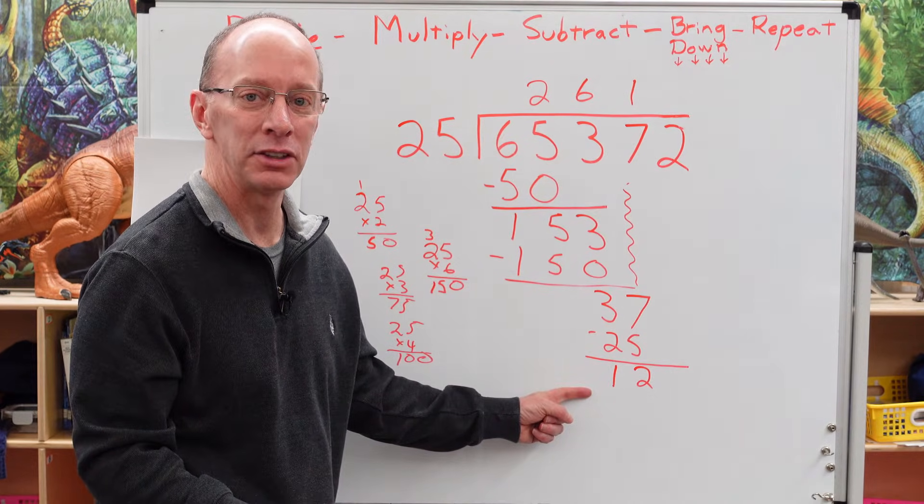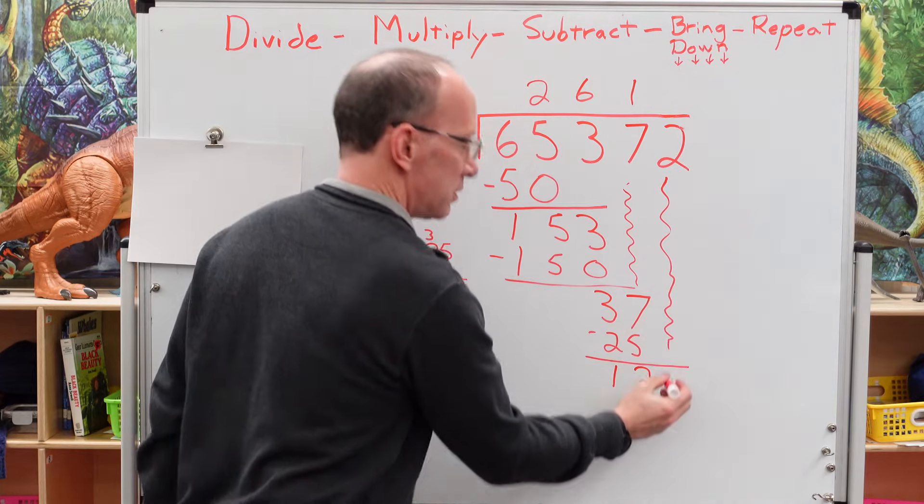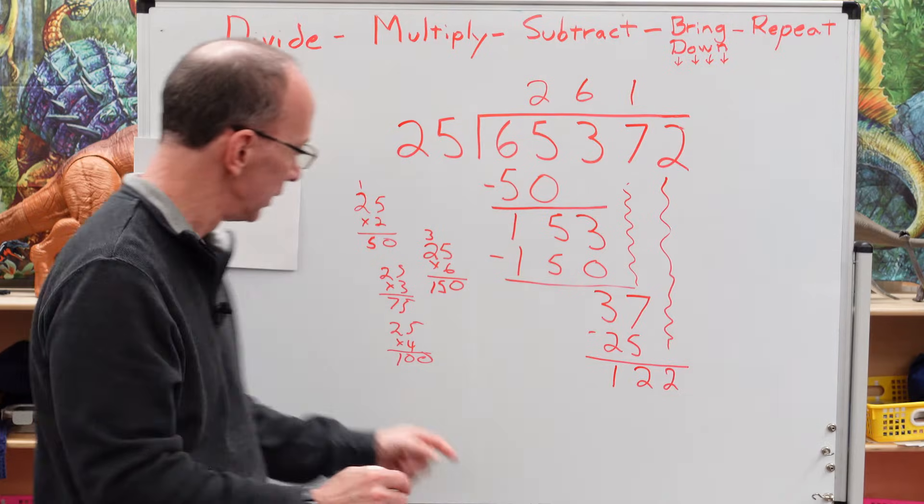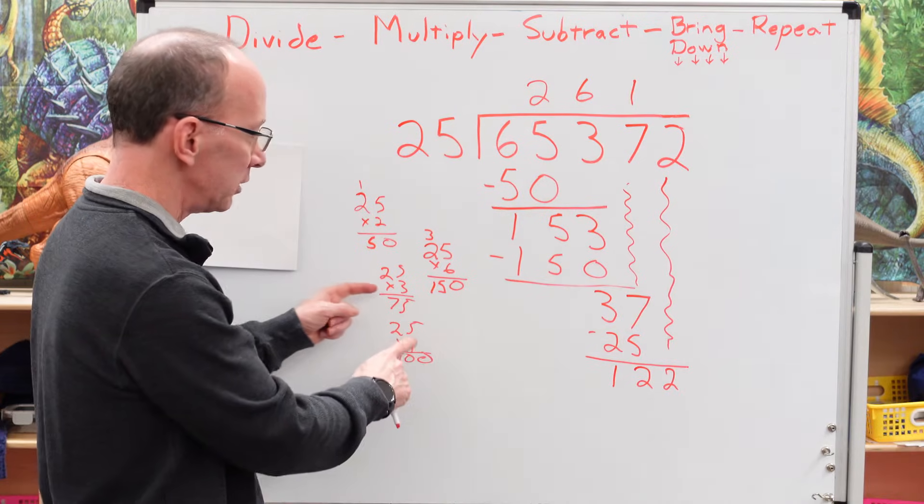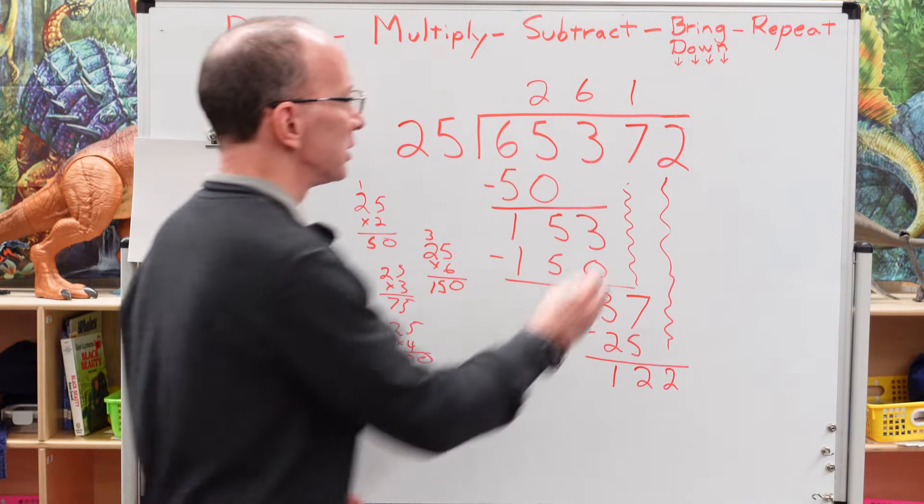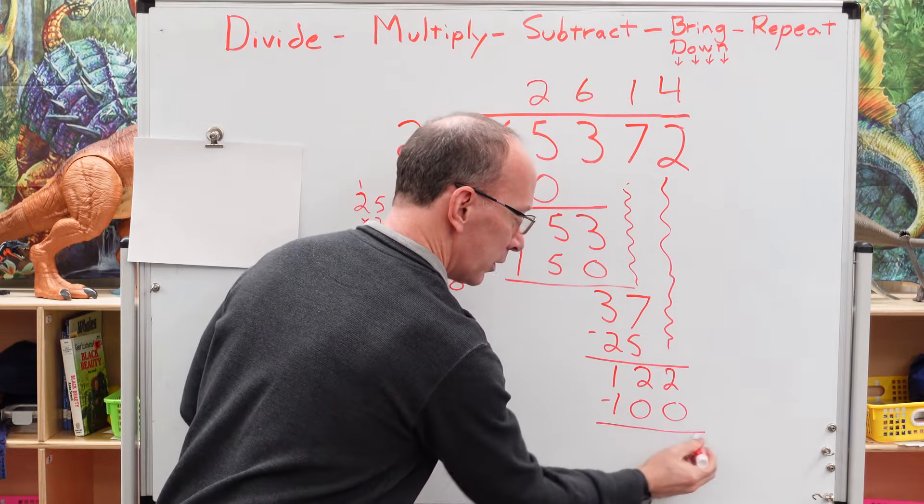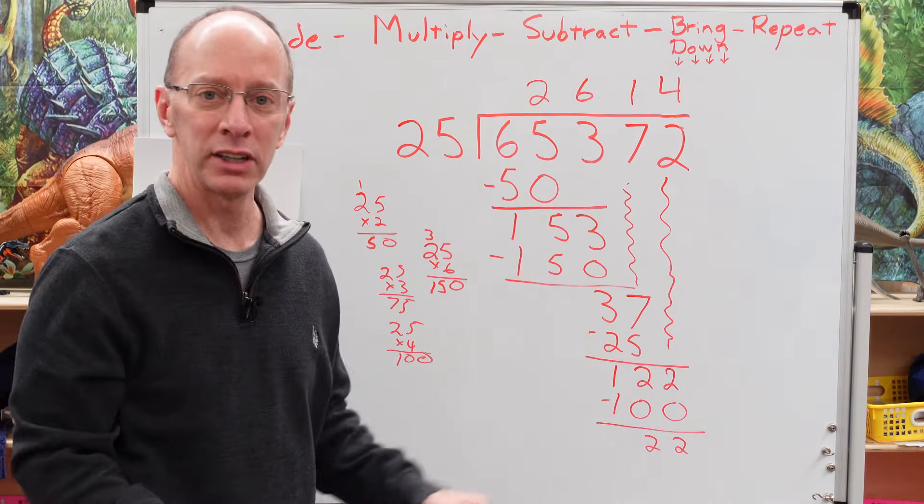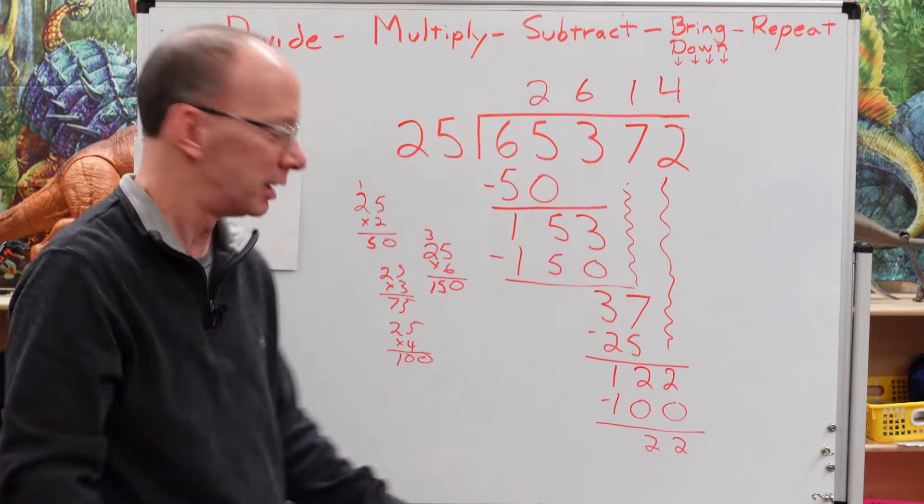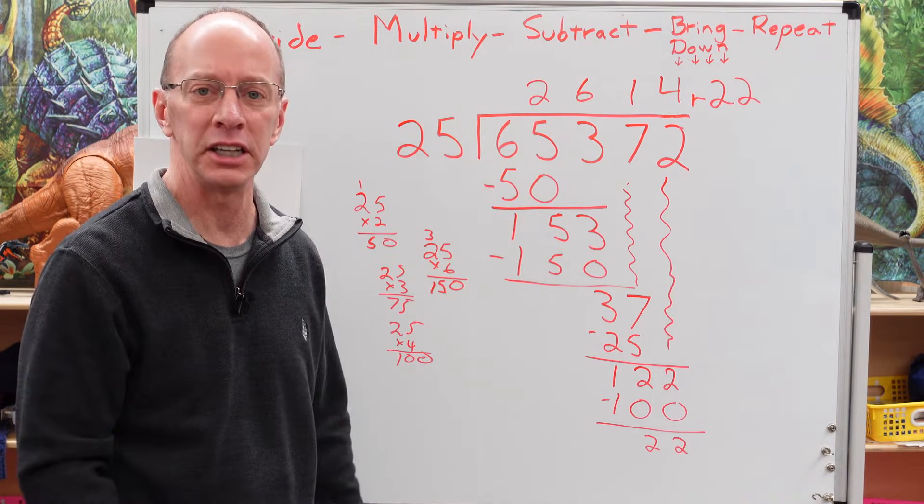So can I put 25 into 12? Nope, can't do it. Next step: bring it down, drop it down. We got 122. How many times can I put 25 into 122? Let's take a look. We got 25 times 4 is 100. 25 times 5 would be 125, too high. Bring it down. I think 4 is going to be our best choice. Four times 25 is 100. Subtract it. We got a 2 and a 2, double 2, 22. Can I put 25 into 22? No, you cannot do it. That is going to be our remainder. We don't have any more numbers to drop down. We are at the end of our number. So we have a remainder, we'll put an R right here. Remainder of 22. So our answer is 2614 remainder 22.